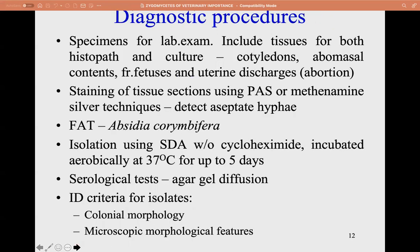Diagnostic procedures: specimens for lab examination include tissues for both histopathology and culture, such as cotyledons, abomasal contents from fetuses, and uterine discharges. In cases of abortion, tissue sections are stained using periodic acid-Schiff or methenamine silver technique to detect aseptate hyphae. Immunofluorescence (FAT) can be used for Absidia corymbifera. Isolation uses SDA without cycloheximide, incubated aerobically at 37°C for up to 5 days. Serological tests include agar gel diffusion. Isolates are identified by colonial and microscopic morphological features.